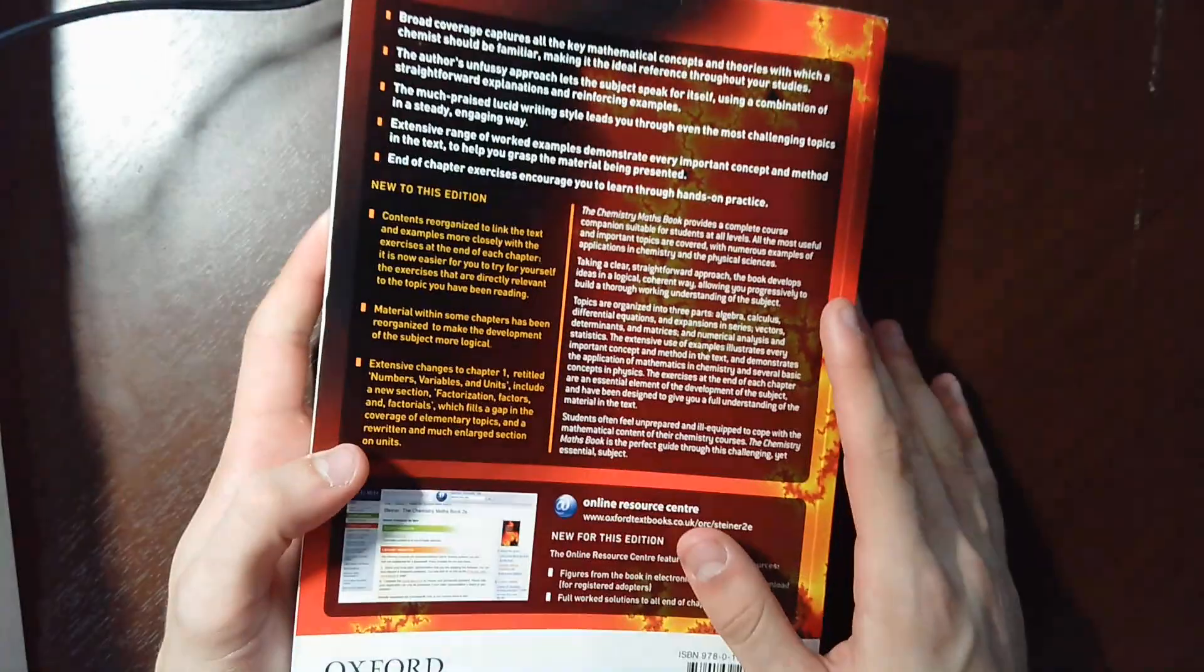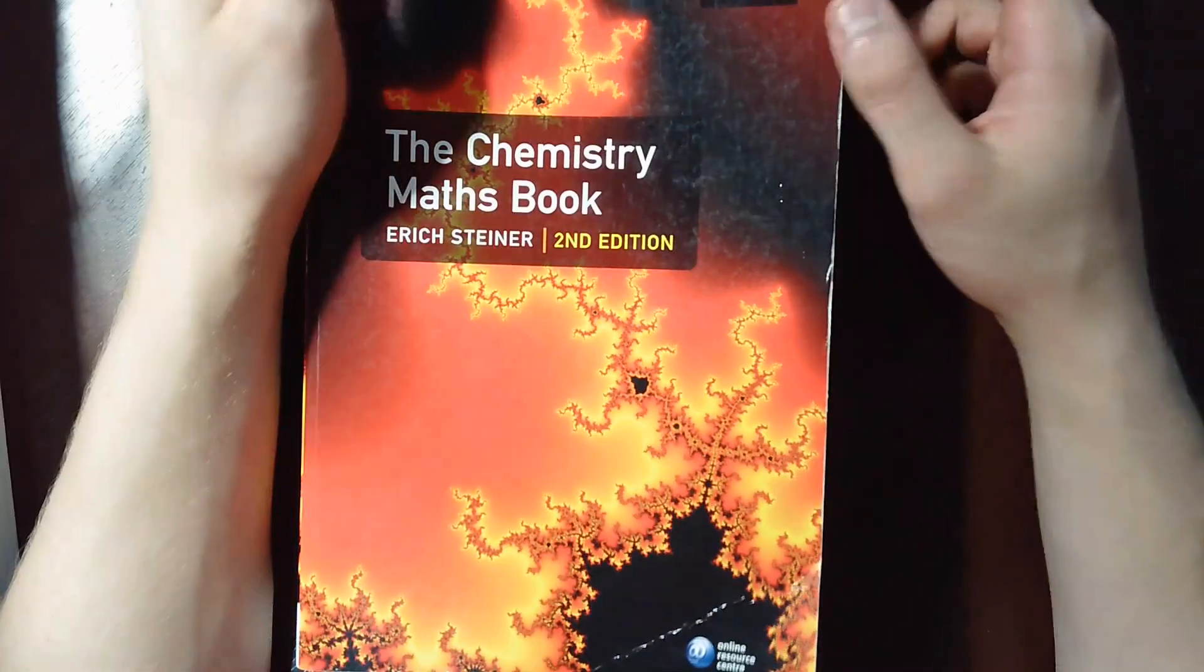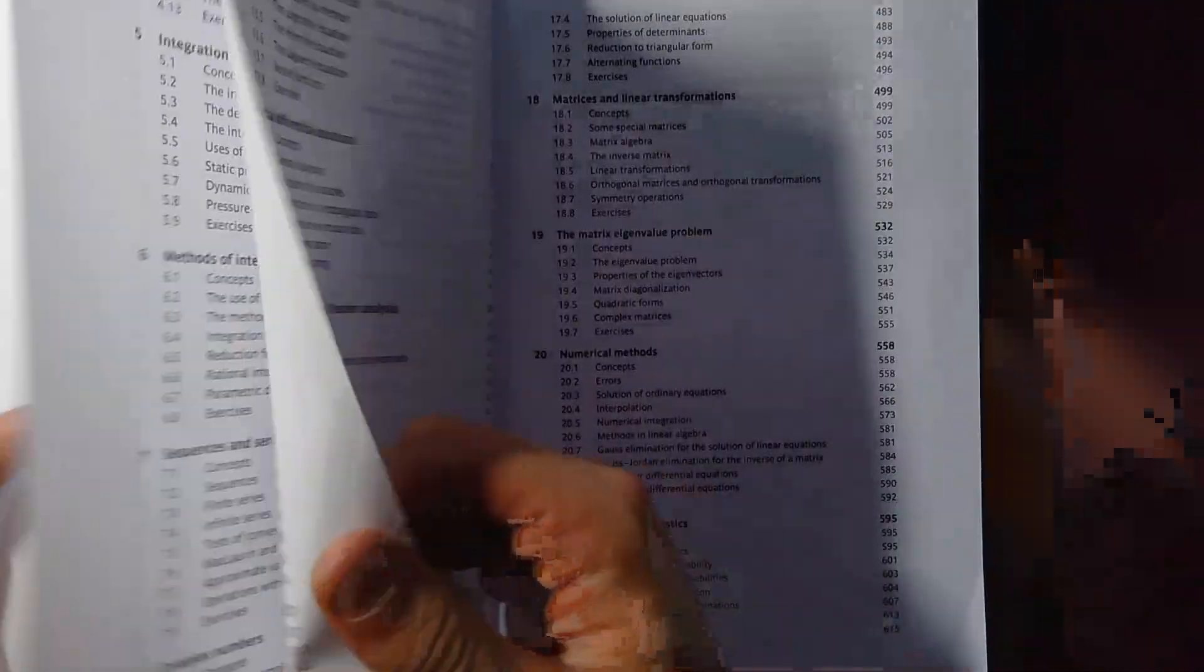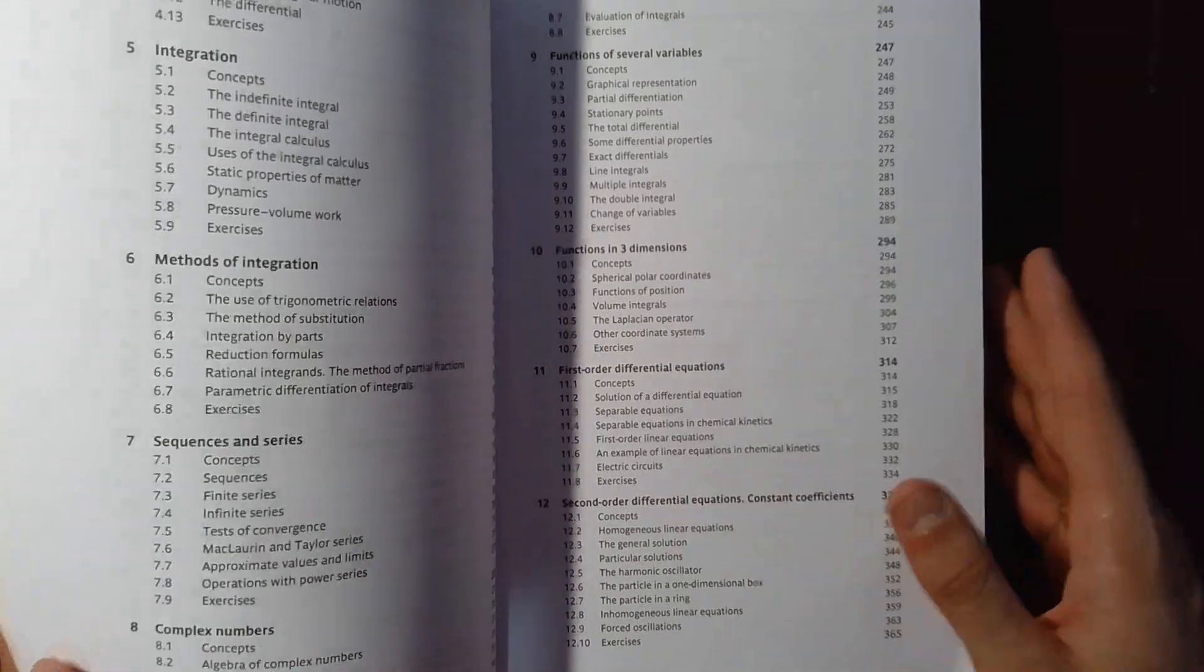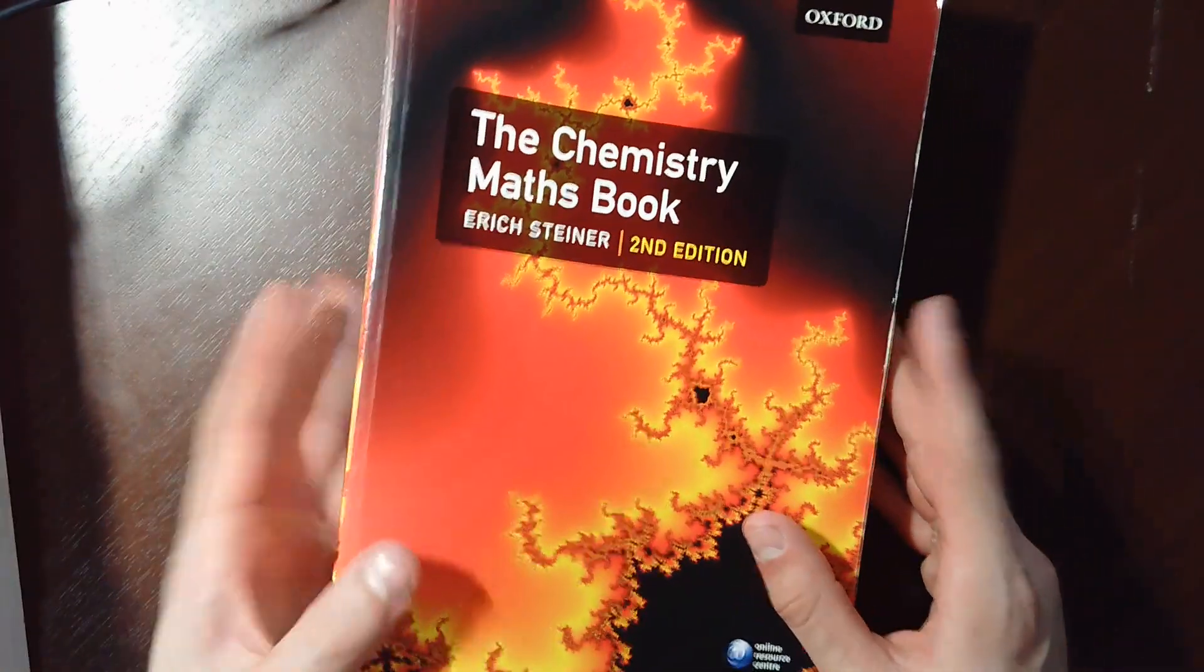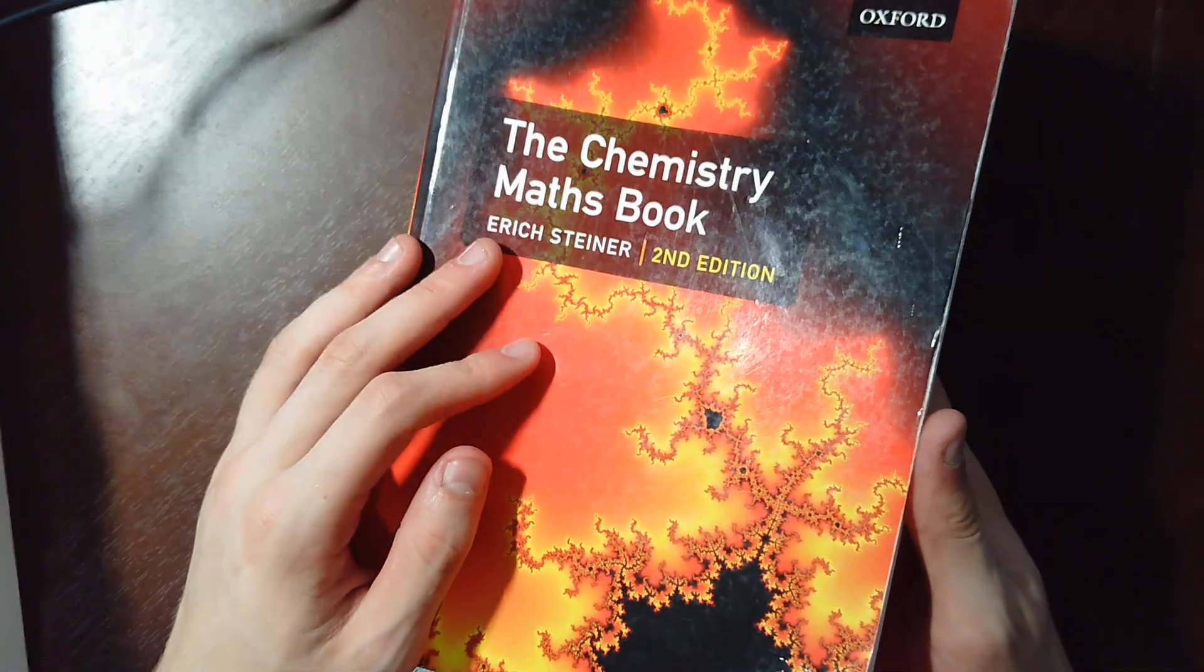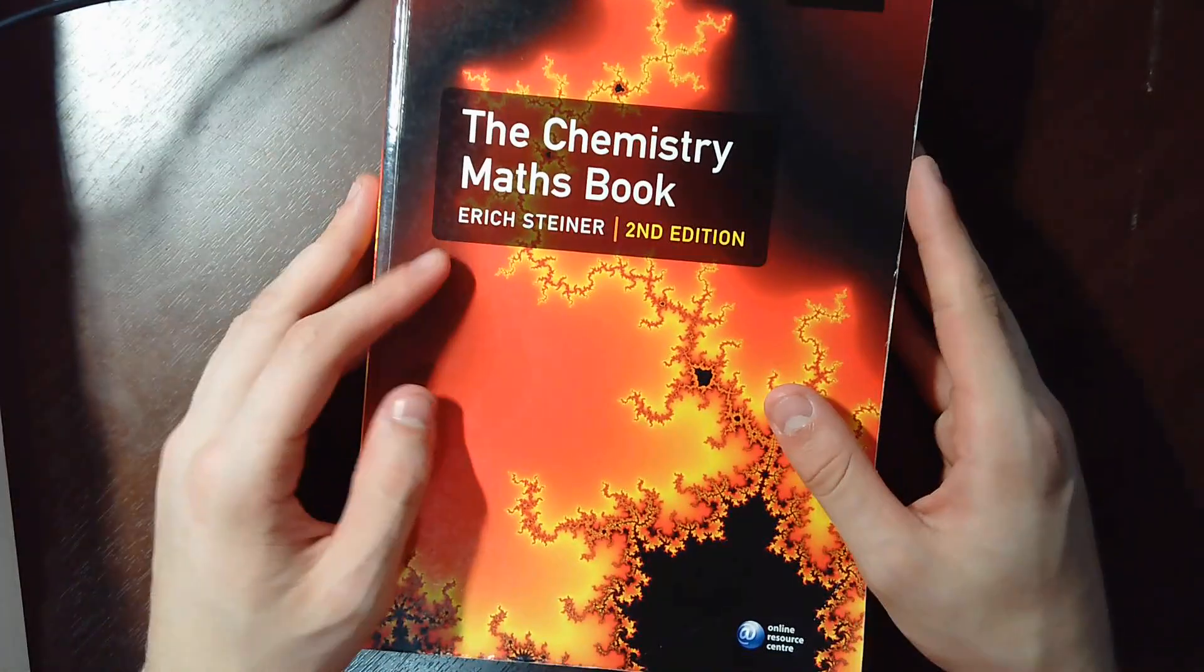So this book, despite its name, is actually a really good math book for physics as well as chemistry. The reason it's called the chemistry math book is because they have specific exercises that a chemistry student would probably need. It goes over the basics of pretty much most mathematics and then goes into some partial differential equations. This is probably the most underrated math book on the planet. I've got a lot of math books and this is probably the one I use the most. This is how I taught myself a lot of stuff.